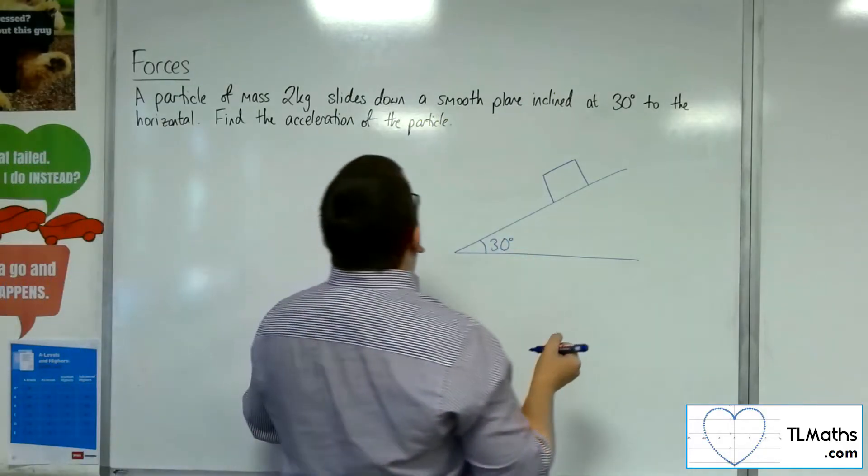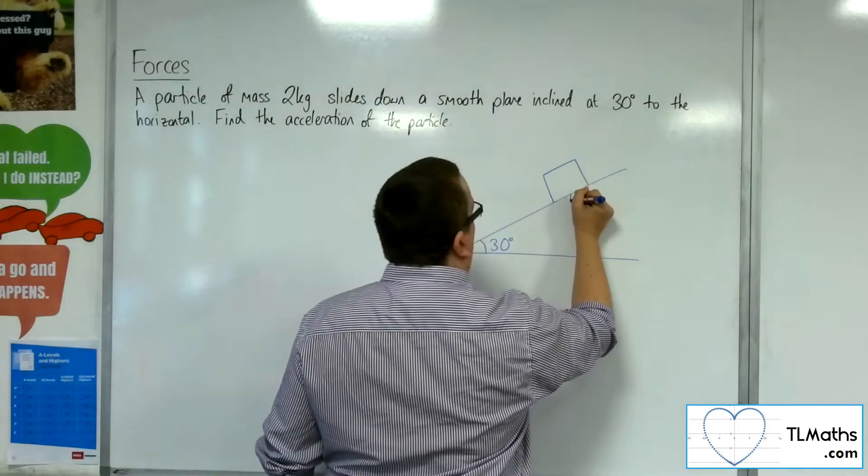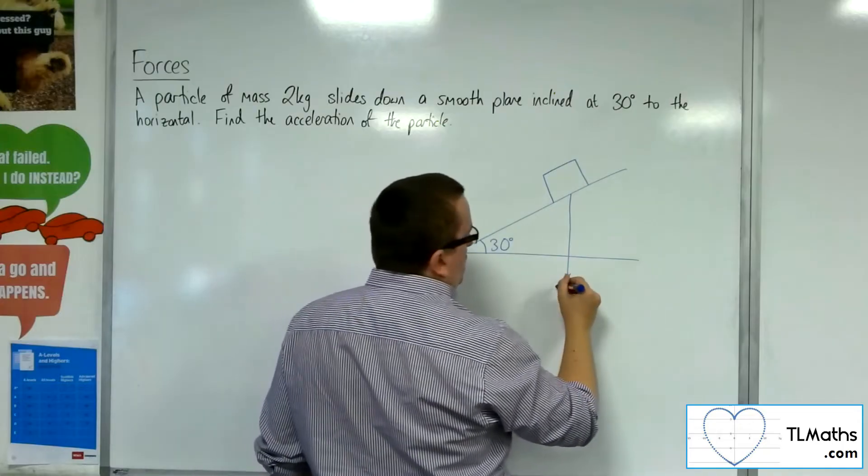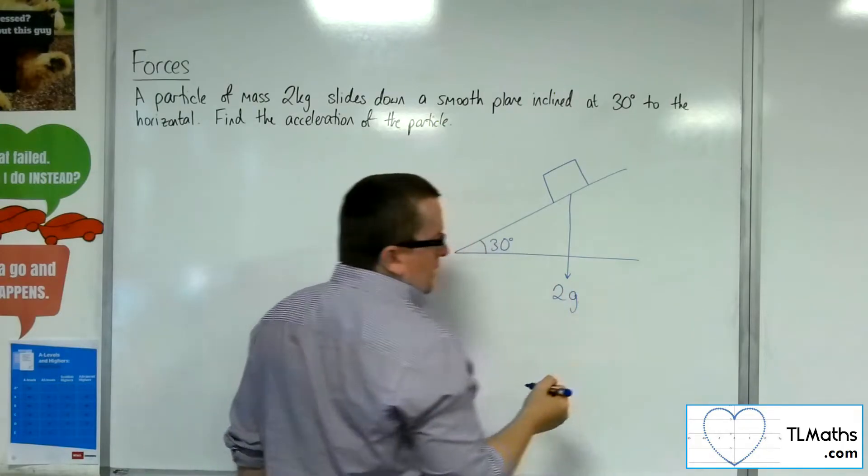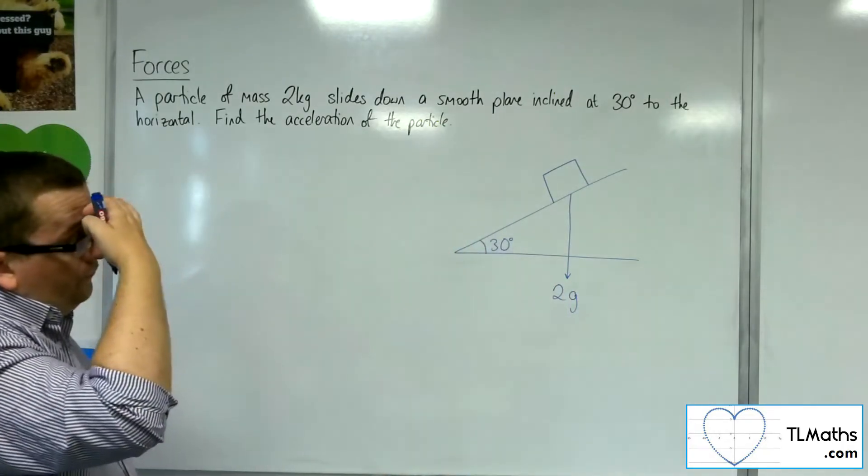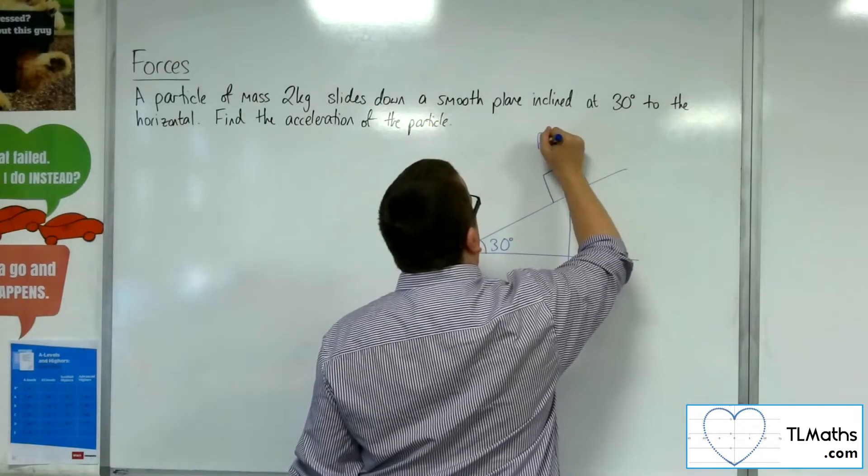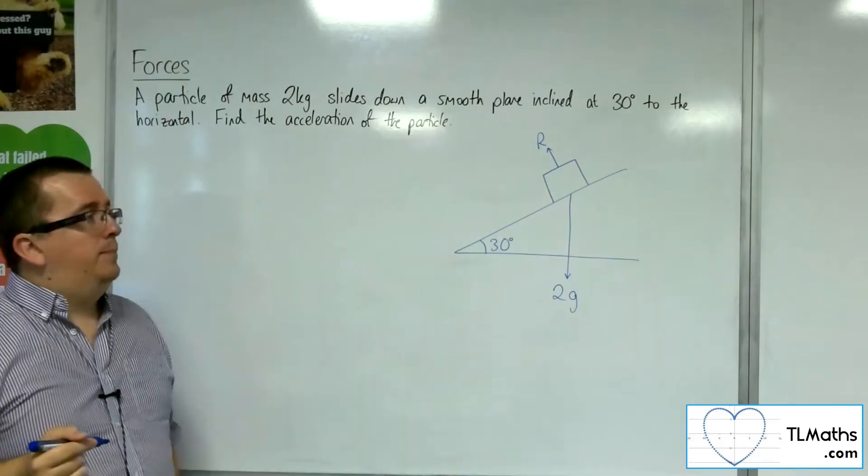And it's got a mass of 2 kilos. So the weight working vertically downwards will be 2 times G. We're going to have a normal reactive force, normal reaction force R, working perpendicular to the plane.